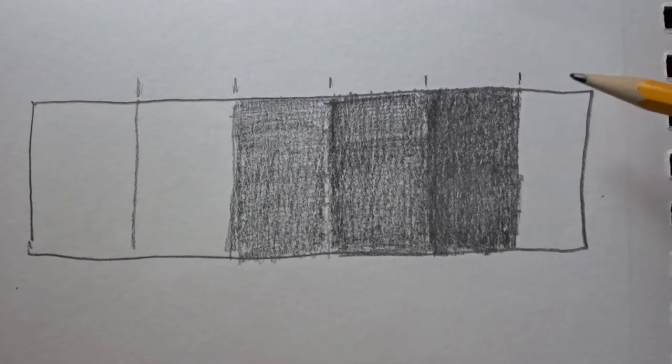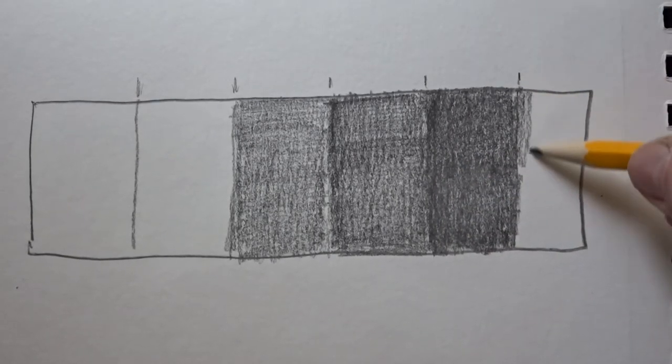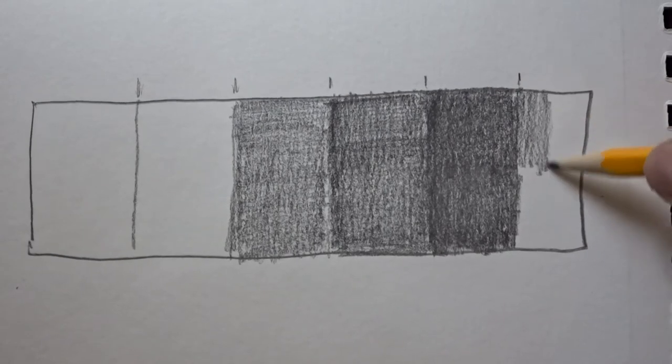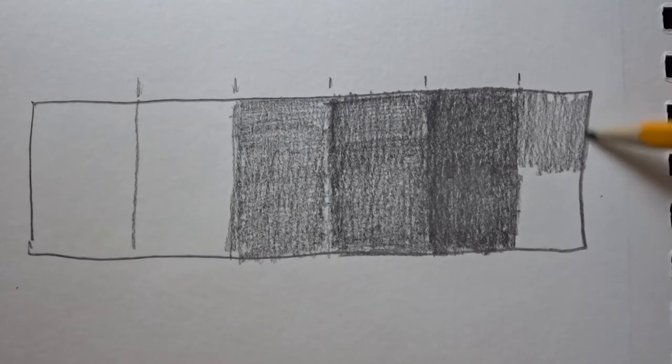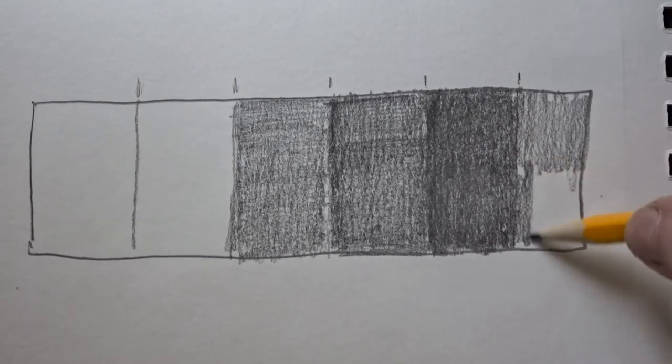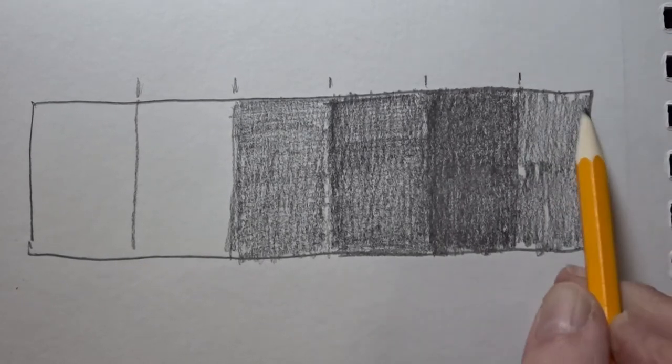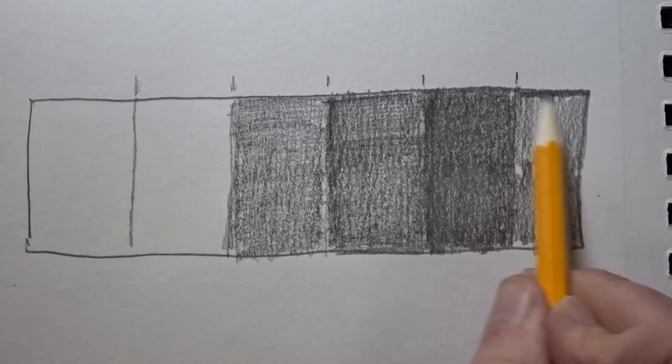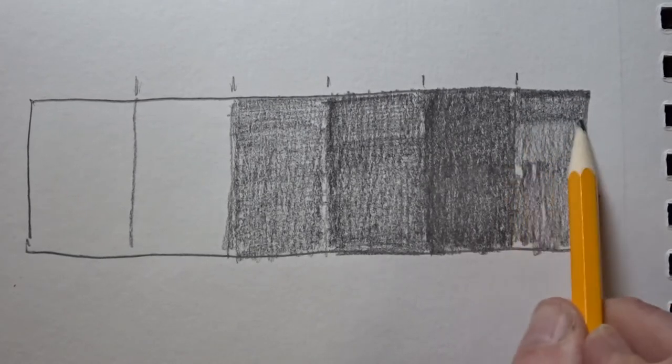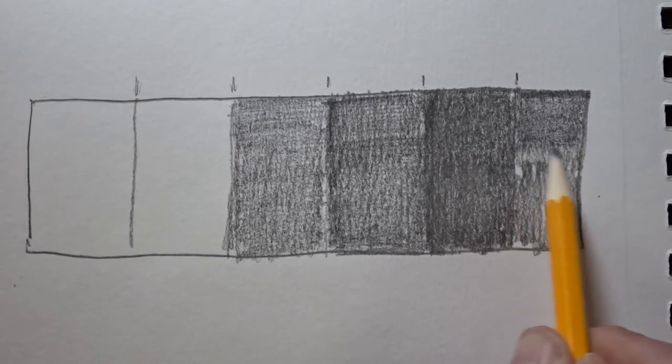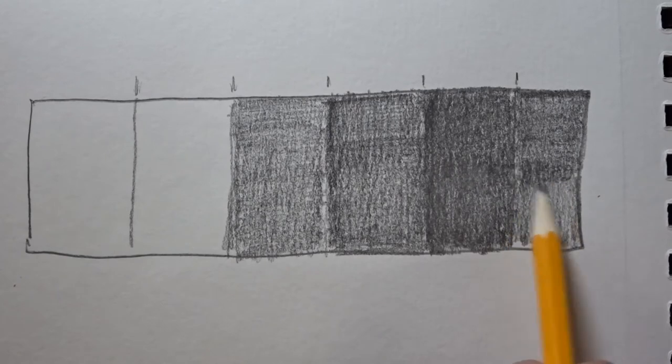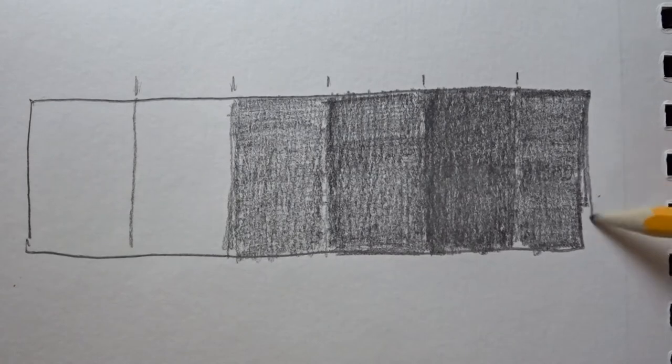And notice that I'm holding my pencil a little closer to the end. It gives me a little bit more control and I can press a little bit more. But notice I'm not starting out really dark. Build those layers up gradually. Build that value up one step at a time. Now that's pretty close to being the same value there, almost a little lighter.